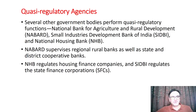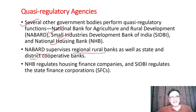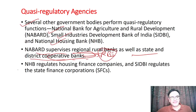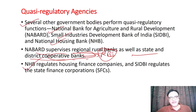There are also quasi-regulatory agencies. Several government bodies perform quasi-regulatory functions, like NABARD, Small Industries Development Bank, and National Housing Bank. NABARD supervises regional rural banks as well as state and district cooperative bodies. National Housing Bank regulates housing finance companies, and SIDBI regulates the state finance corporations.